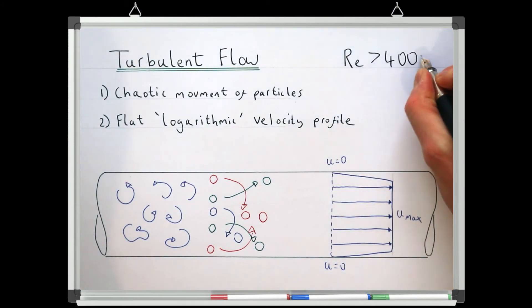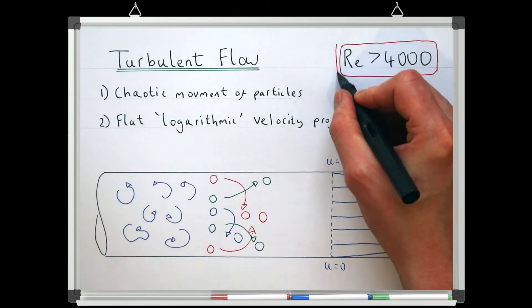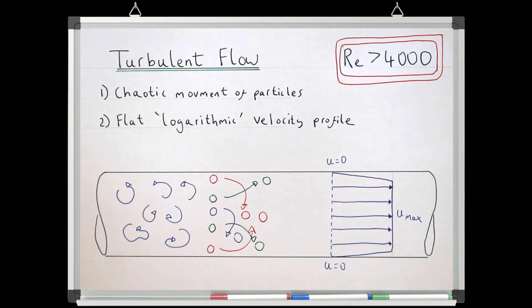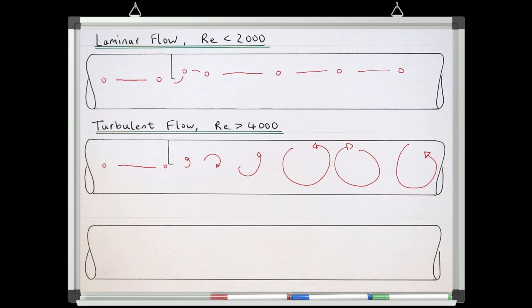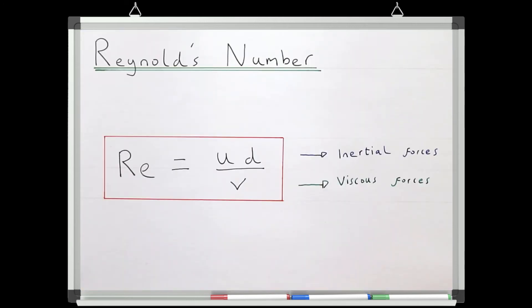When Reynolds number is more than 4000, the flow will be turbulent as inertial forces are now dominant. Now if a particle hits a pin, the particle will start to spin, but because the inertial forces are larger than the viscous forces, the viscous forces can no longer dampen out the spinning, so the particle's spinning will propagate into full-scale turbulence that will eventually fill the whole pipe. This is also why we have a diameter in the Reynolds number — called the length scale — because the diameter of the pipe will limit the scale of the turbulence, as turbulent eddies cannot be any larger than the pipe's diameter.